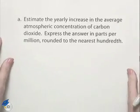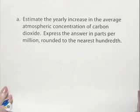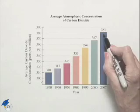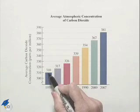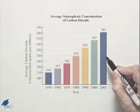Estimate the yearly increase in the average atmospheric concentration of carbon dioxide. Express the answer in parts per million rounded to the nearest hundredth. What I'm going to do is notice that this looks almost linear, where we can start with a data point in 1950 and then end with a data point in 2007.